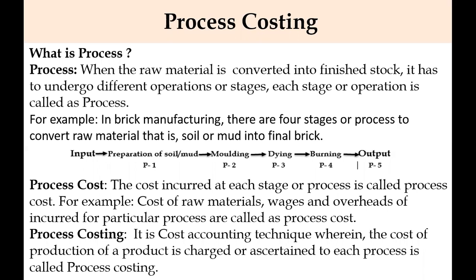In order to convert raw material into finished goods, we have to incur some costs at each stage. The cost incurred at each stage or process is called process cost — for example, cost of raw materials, cost of wages, and cost of overheads incurred for a particular process.